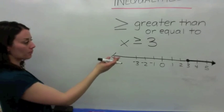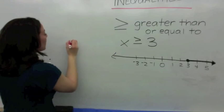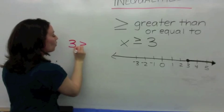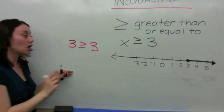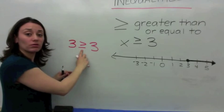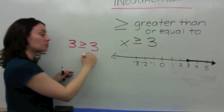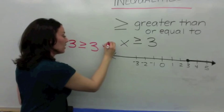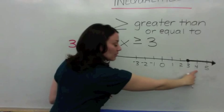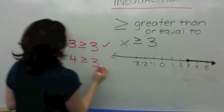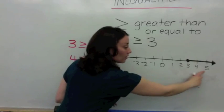Is 3 greater than or equal to 3? Interesting question. Well, it is equal because 3 is equal to itself, so this is a true statement. Is 4 greater than or equal to 3? Yes — that's the next number we shade. And is 5 greater than or equal to 3? Yes.